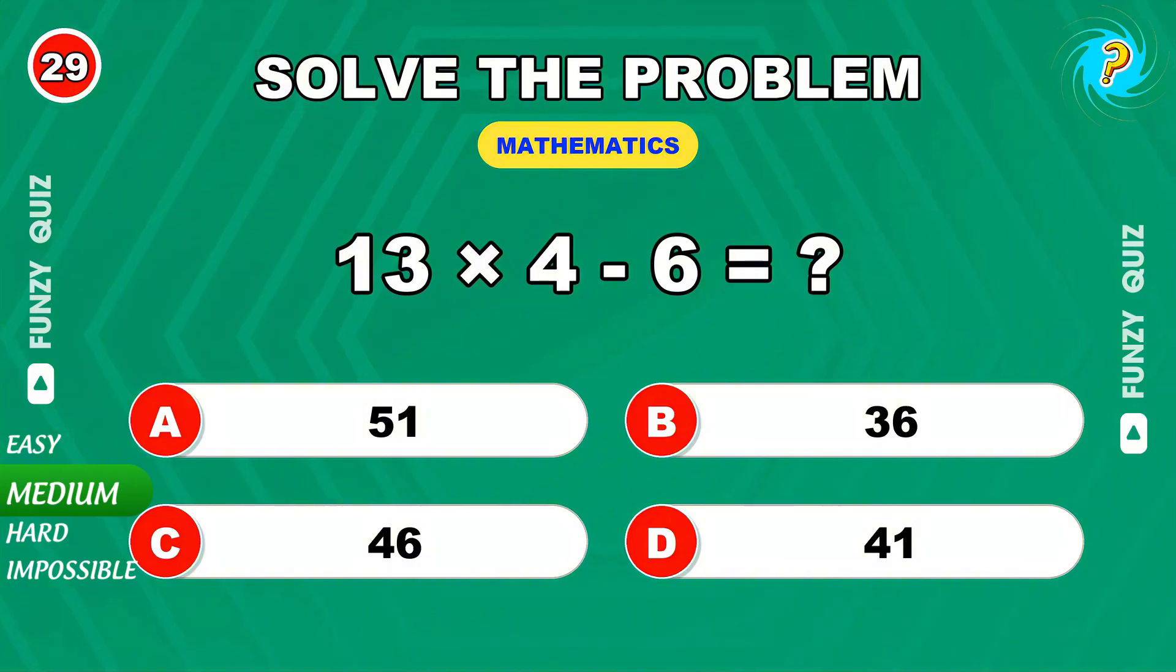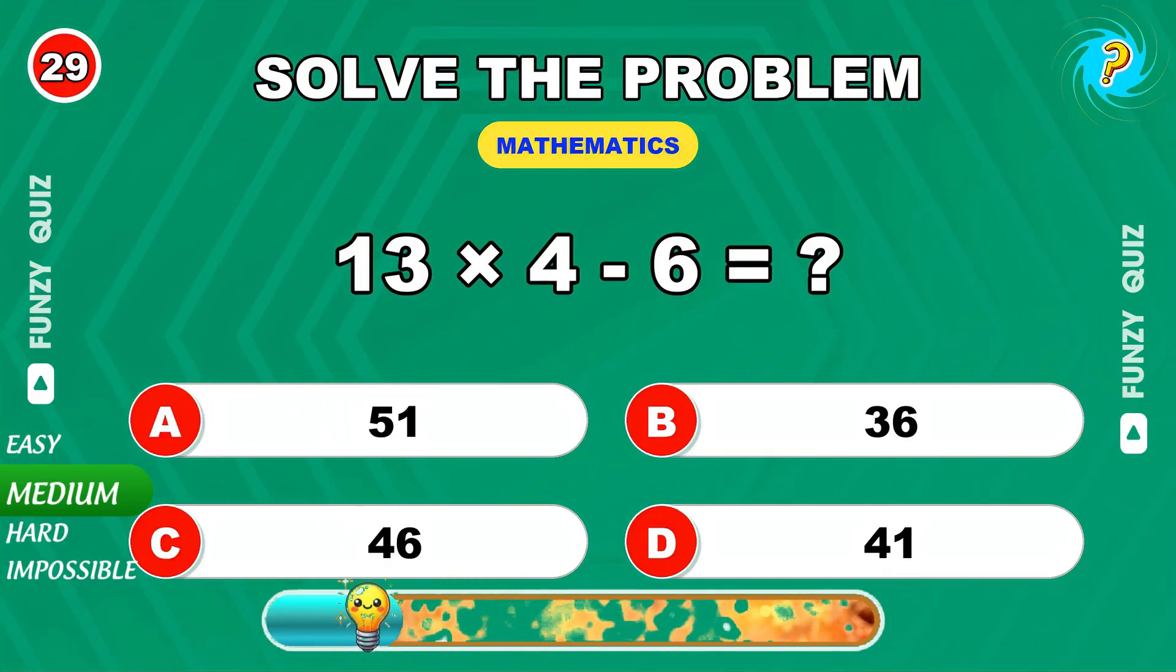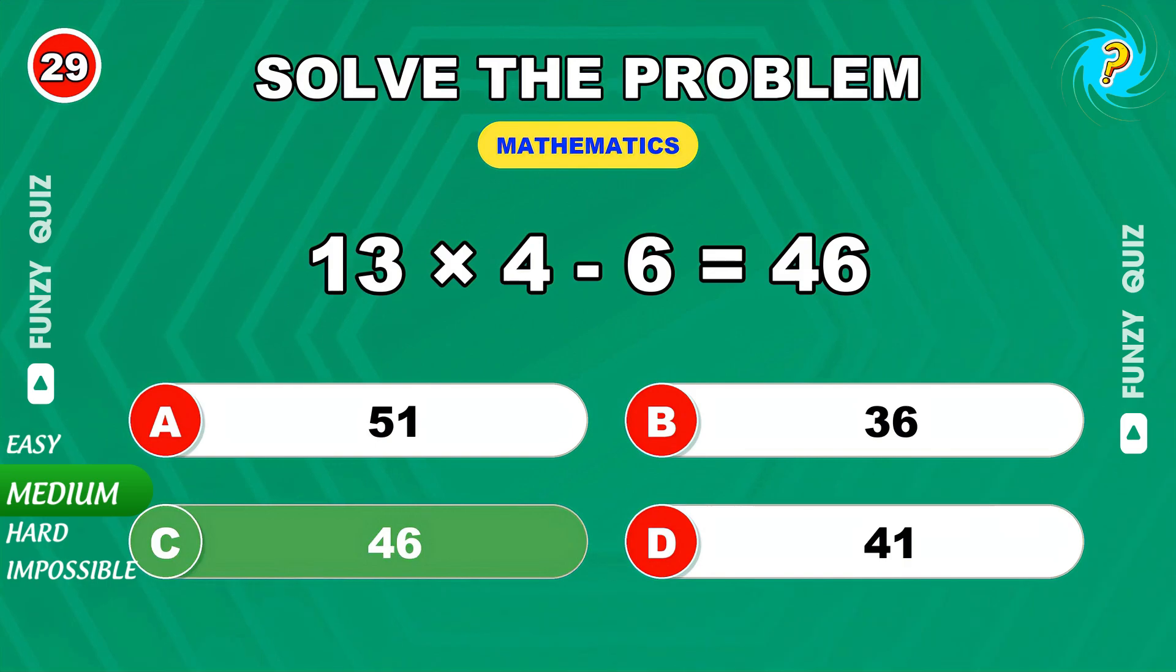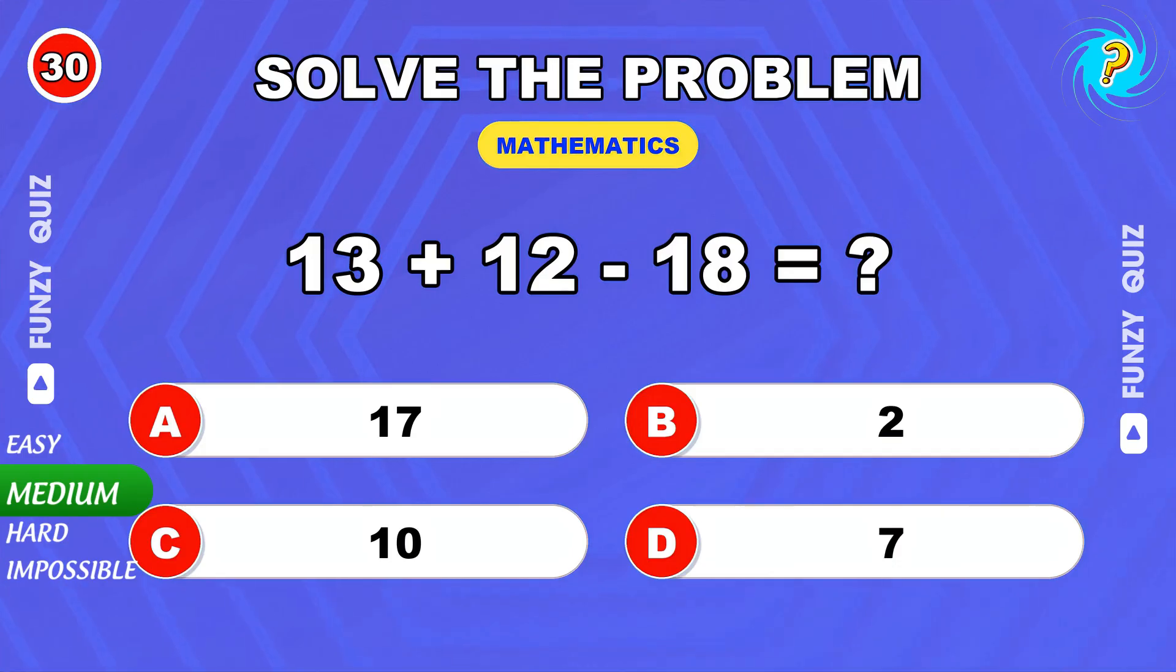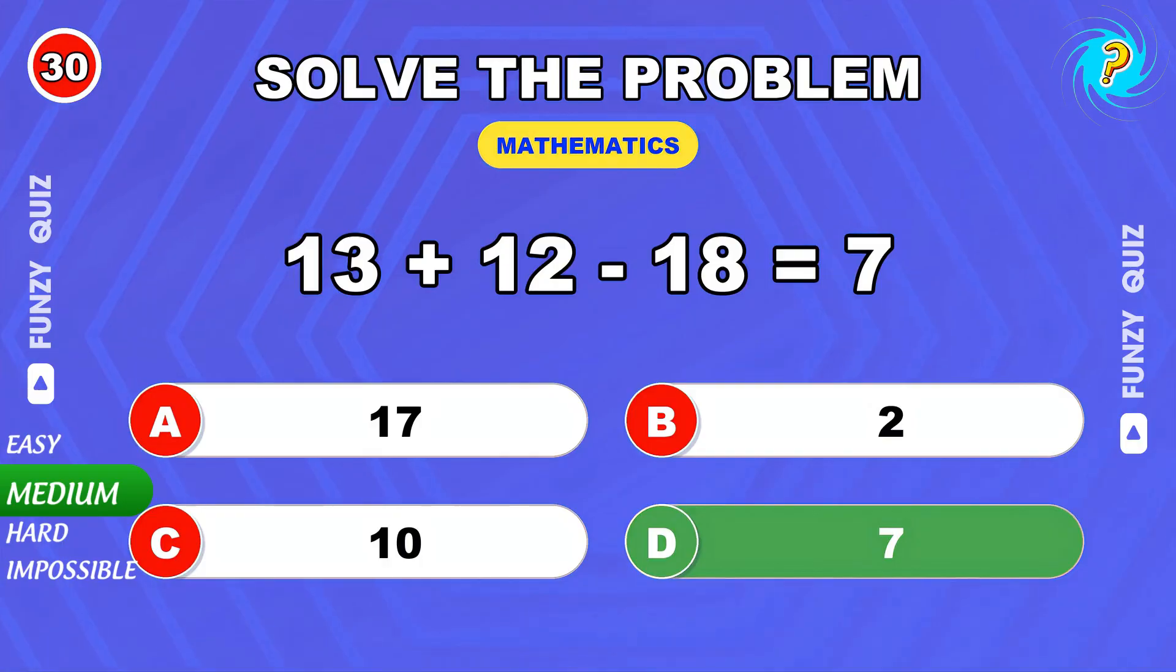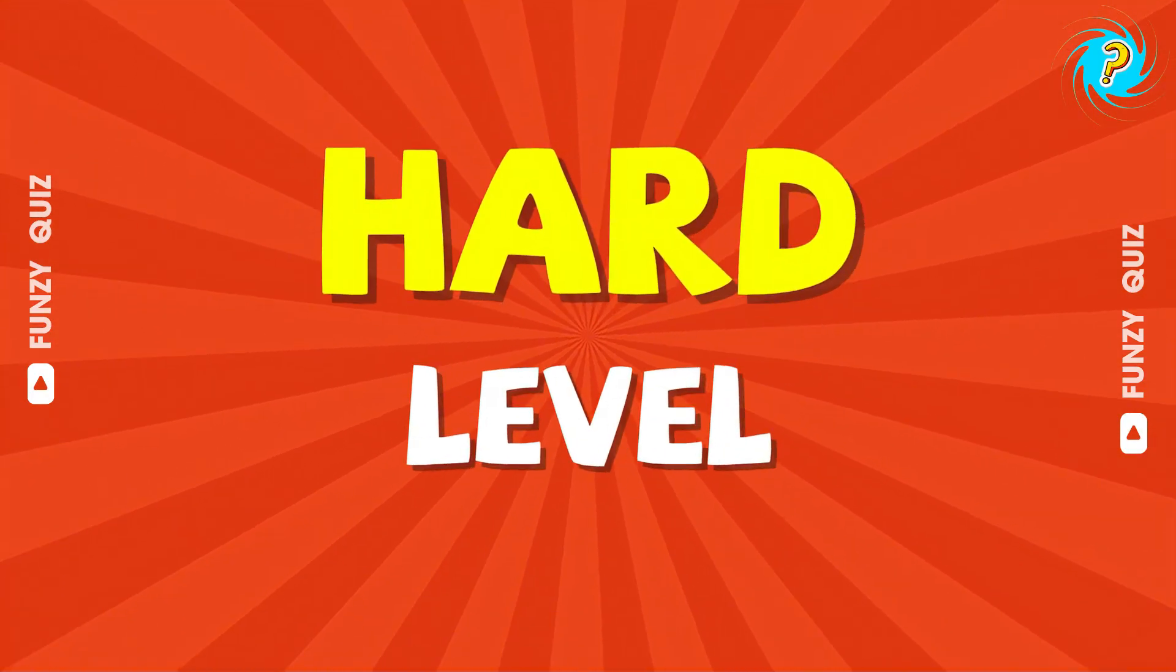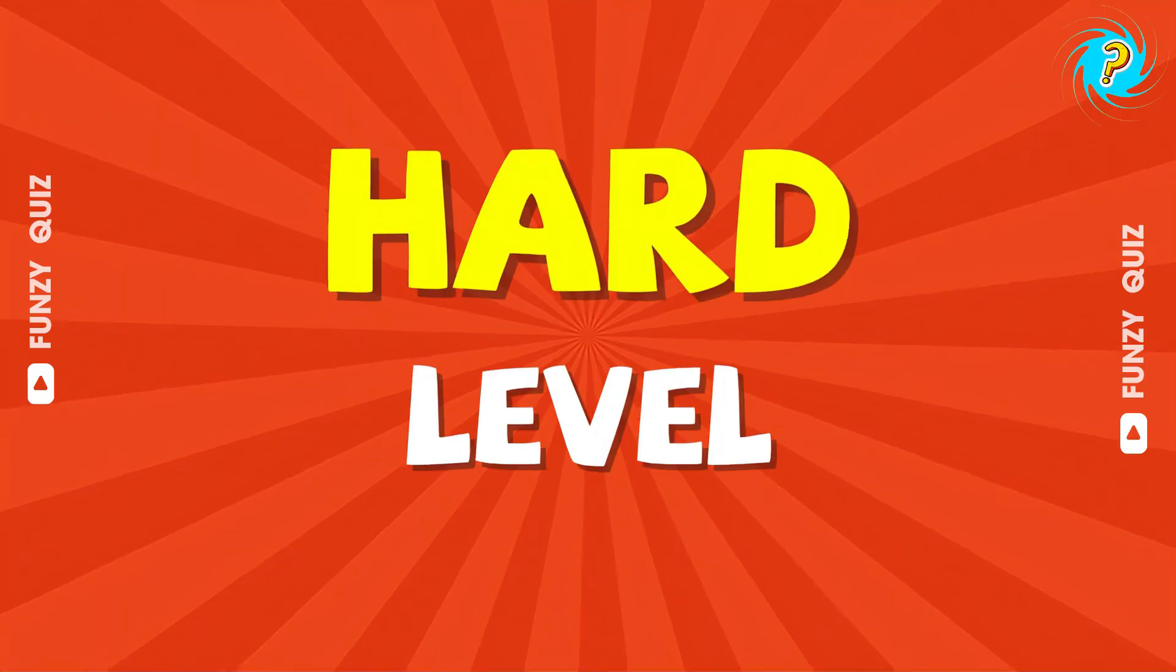13 times 4 minus 6. 46. 13 plus 12 minus 18. 7. Awesome work! You're halfway there. Let's keep the momentum going. Comment your score so far.